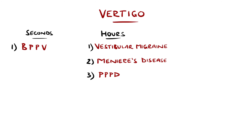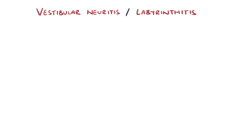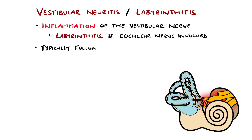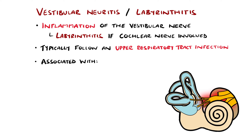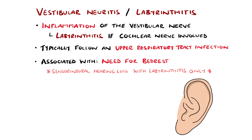When the vertigo lasts days, vestibular neuritis or labyrinthitis become more likely, where there is inflammation of the vestibular nerve. It is termed labyrinthitis when there is also inflammation of the cochlear nerve, which anatomically lies adjacent to the vestibular nerve. Typically, these come on following an upper respiratory tract infection and cause vertigo lasting days, alongside nausea and feeling particularly unwell, necessitating bed rest. Hearing is also affected in labyrinthitis, most commonly causing an irreversible sensorineural hearing loss, but not in vestibular neuritis.